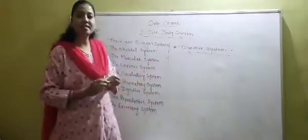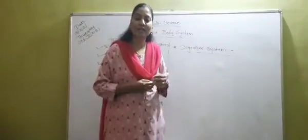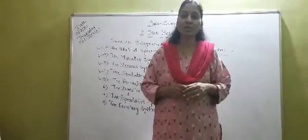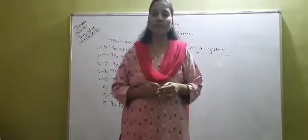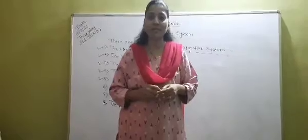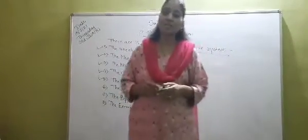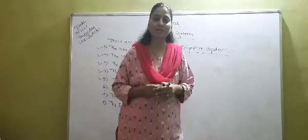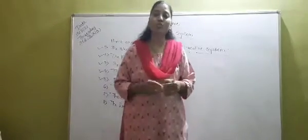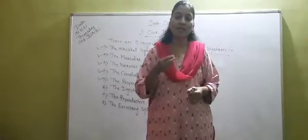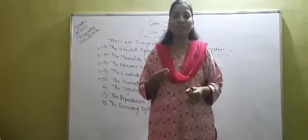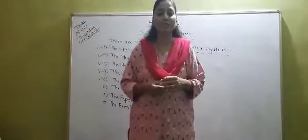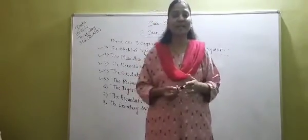Students, the digestive system is related to the digestion of food. It is said that the process of digestion starts from your mouth. When we eat the food, that food passes with the help of the food pipe to our stomach, and from the stomach it enters to the small intestine, and then it enters to the large intestine.